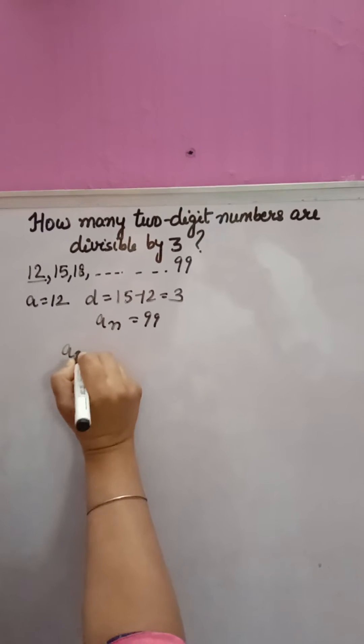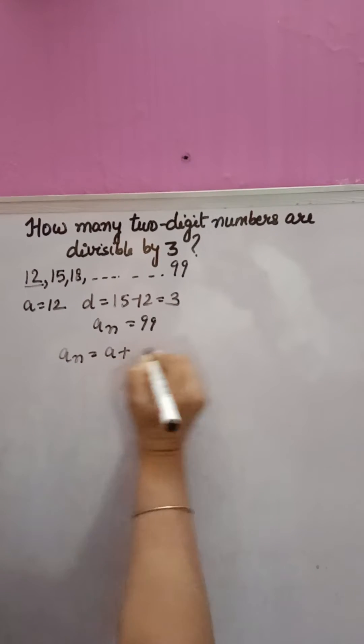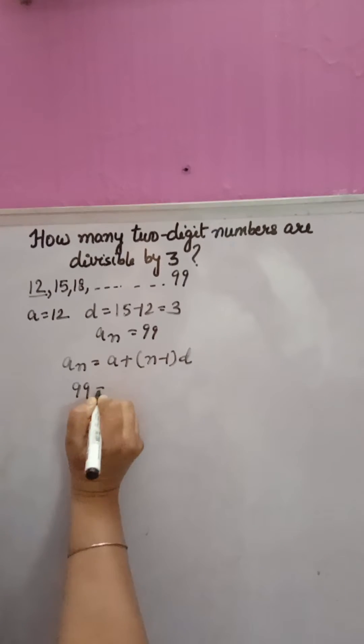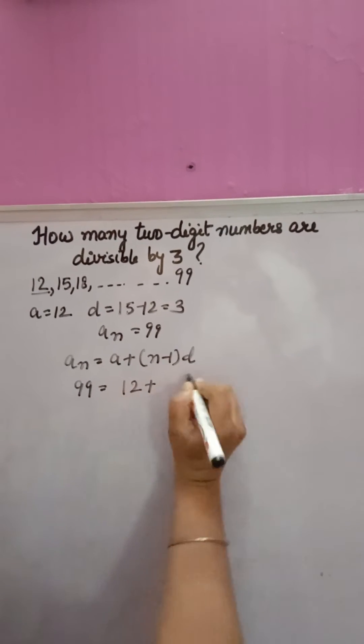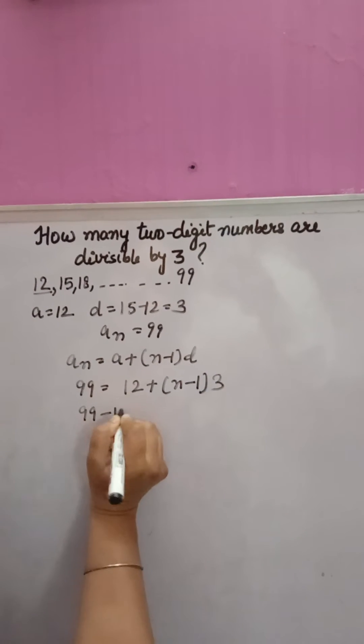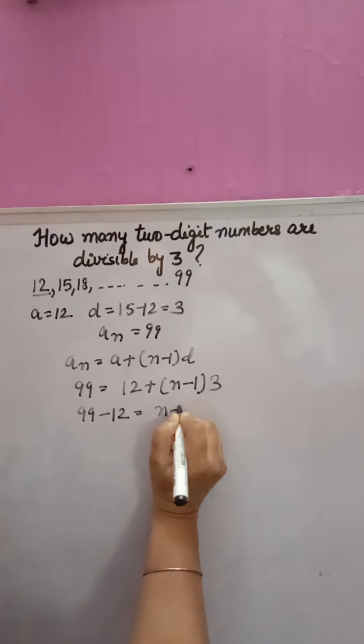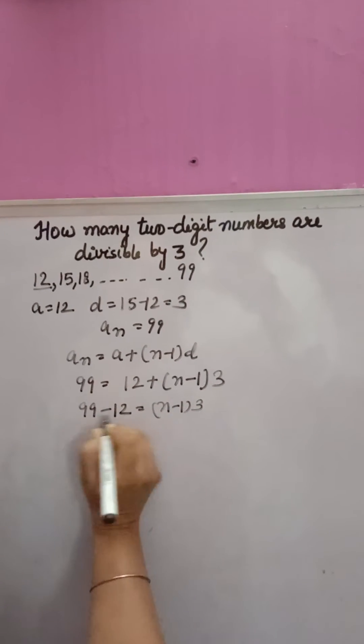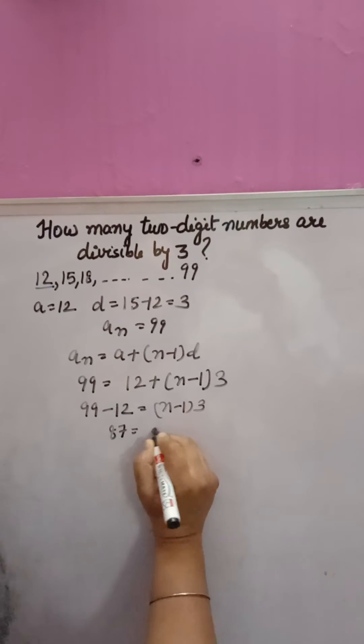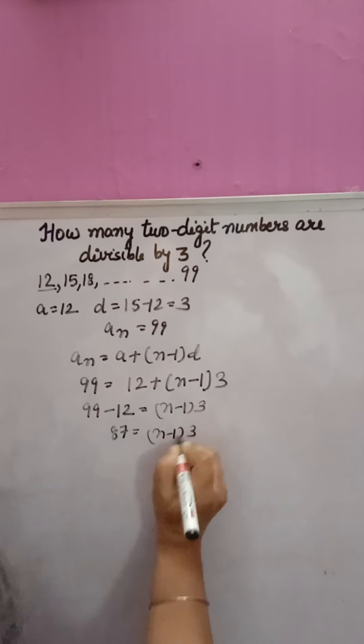Using the formula: an = a + (n-1)d where d is 3. So 99 equals 12 plus (n-1) times 3. 99 minus 12 equals (n-1) times 3, which gives us 87 equals (n-1) times 3.